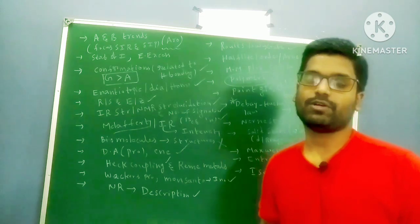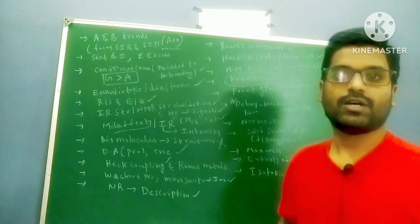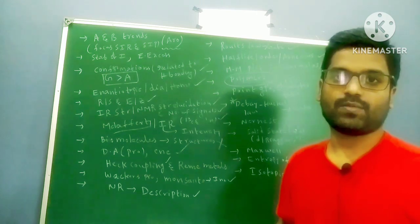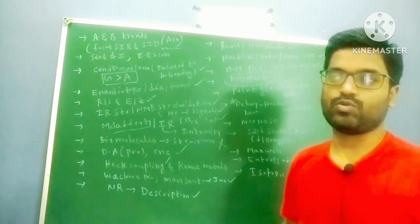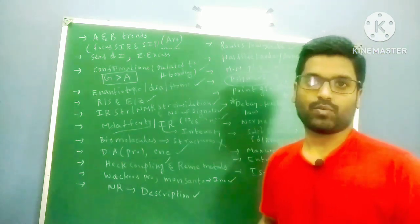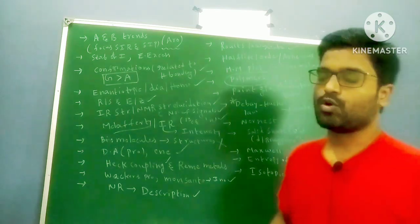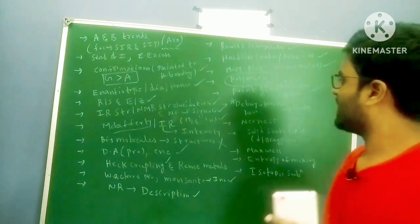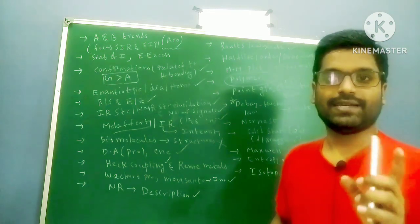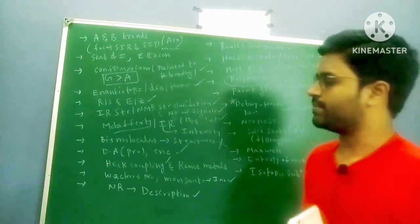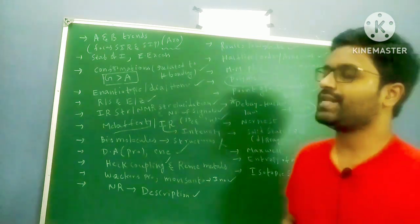For polymer chemistry — it is a very easy and small chapter. Number-average molar mass and weight-average molar mass formulas are frequently asked, so focus on those. Next, point groups and character tables in group theory — point groups are very important, character tables are very important. You can expect at least one question on either point groups or character tables.